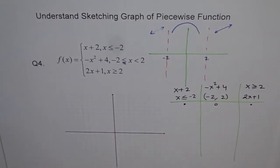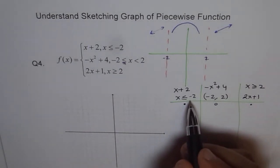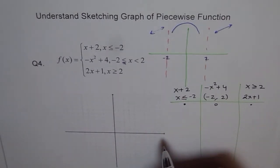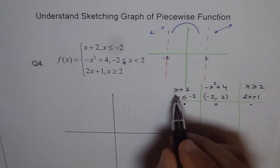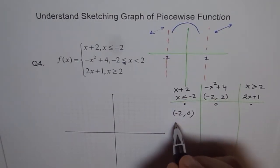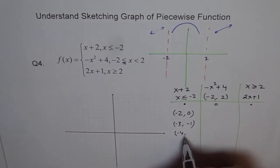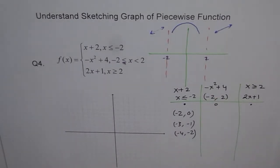Starting with the first piece using x plus 2: at x equals minus 2, we get minus 2 plus 2 equals 0. At x equals minus 3, we get minus 1. At x equals minus 4, we get minus 2. That's enough points for a straight line.